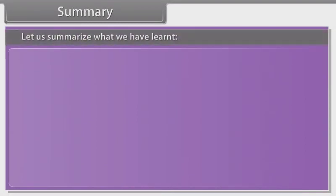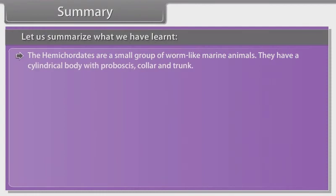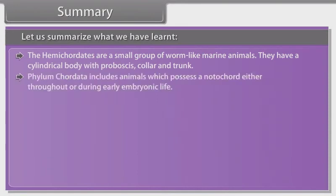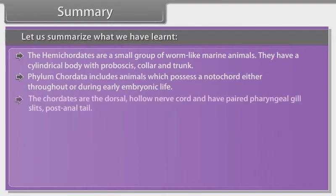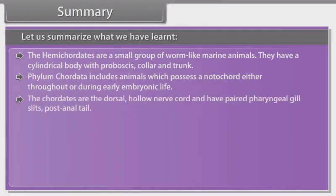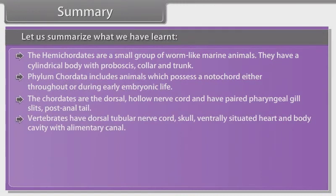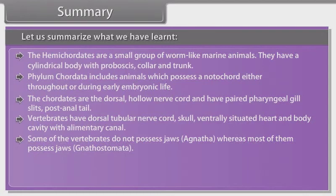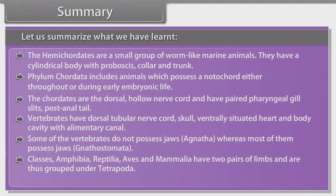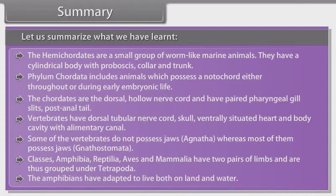Let us summarize what we have learnt. Hemichordates are a small group of worm-like marine animals with cylindrical body having proboscis, collar and trunk. Phylum Chordata includes animals which possess a notochord either throughout or during early embryonic life. Chordates have a dorsal hollow nerve cord and paired pharyngeal gill slits and a post-anal tail. Vertebrates have a dorsal tubular nerve cord, skull, ventrally situated heart and body cavity with alimentary canal. Some vertebrates do not possess jaws (Agnatha), whereas most of them possess jaws (Gnathostomata). Classes Amphibia, Reptilia, Aves and Mammalia have two pairs of limbs and are thus grouped under Tetrapoda.